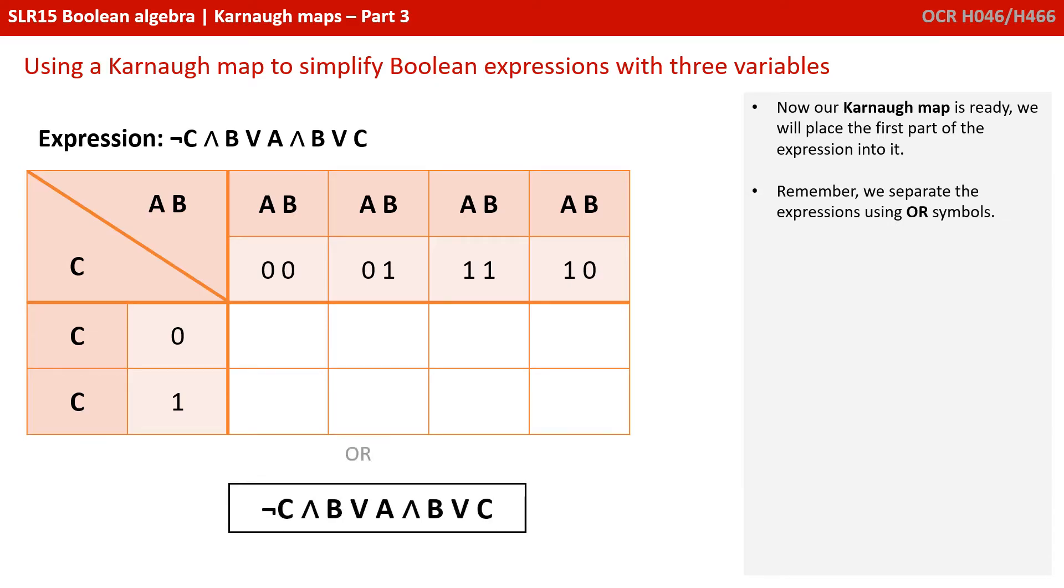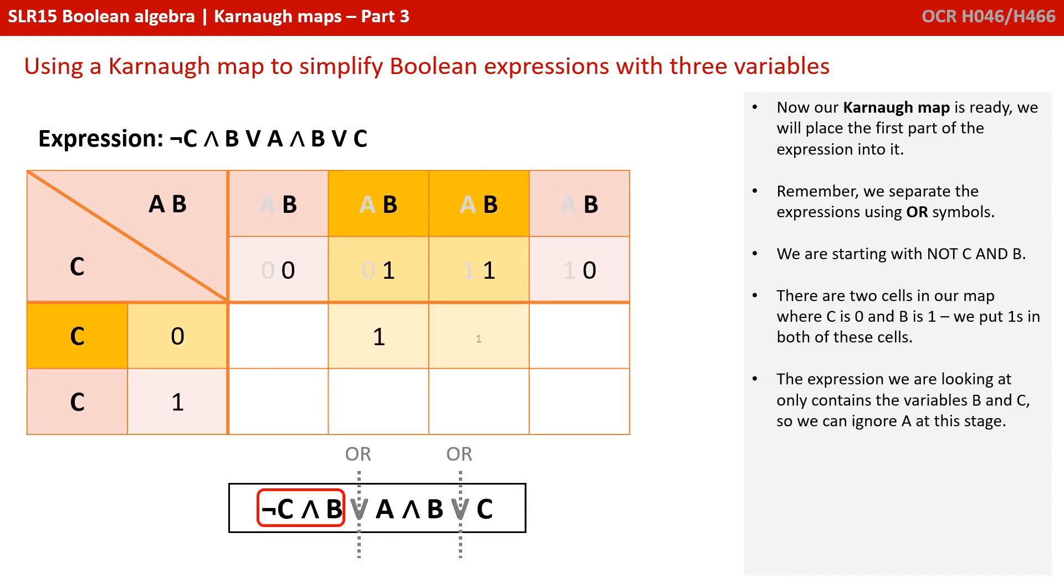Now our Karnaugh map is ready. We will place the first part of the expression into it. Remember, we separate the expression using OR symbols. So we're starting with NOT C AND B. There are two cells in our map where C is 0 and B is 1, so we put 1 in both of those cells. The expression we're looking at only contains the variables B and C, so we can ignore A at this stage.